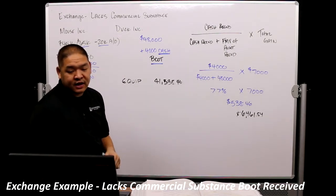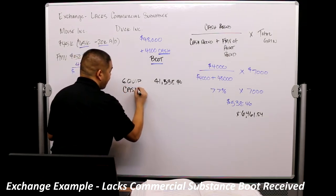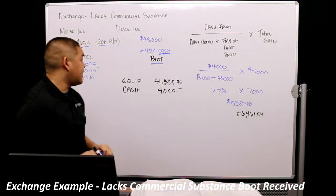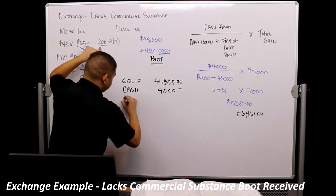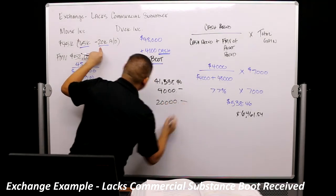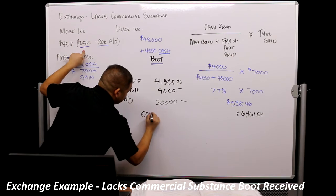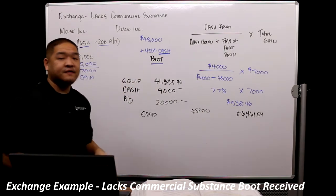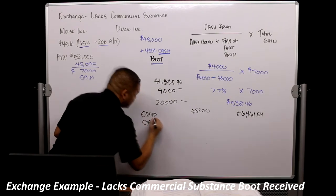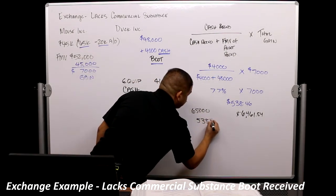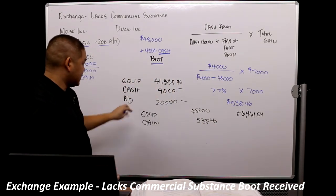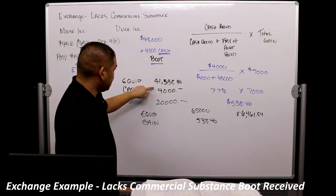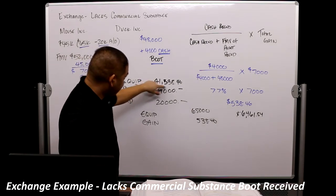So we debit new equipment for $41,538. We're receiving cash, so we credit cash for $4,000. We have to get rid of accumulated depreciation on the old equipment — $20,000. We have to get rid of the historical book value of the old equipment — $65,000. And then all we have left is the gain — $538.46. The debits equal the credits: $41,538.46 plus $4,000 on debit side balanced against $65,000 and $20,000 plus $538.46 on credit side.